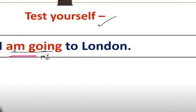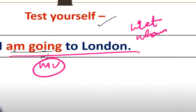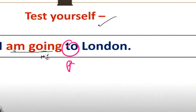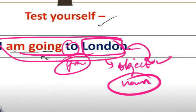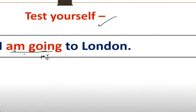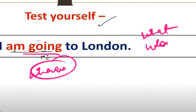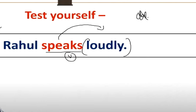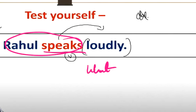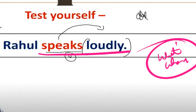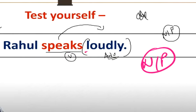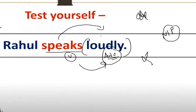There is no object here because there is no noun or pronoun after the verb in that way. We need to see whether a noun or pronoun follows the 'what' and 'whom' question after the verb. 'Rahul speaks loudly' - Rahul speaks what? Rahul speaks whom? This answer is not coming, so 'loudly' is not an object. Rahul speaks how? 'Loudly' answers 'how', but not 'what' and 'whom'. So it is not an object - 'loudly' is an adverb, not a noun or pronoun.